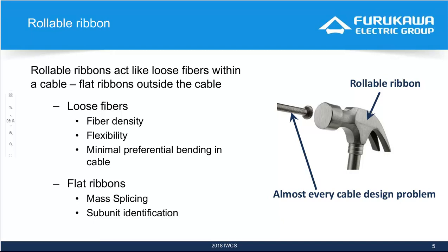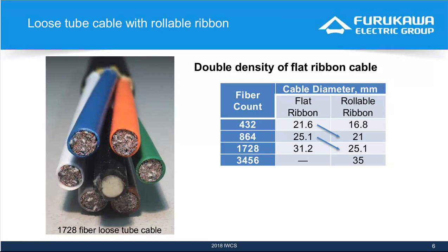Rollable ribbon is very exciting to me as a cable designer. As we look at rollable ribbon and its uses, it looks like a hammer and almost every cable design problem looks like a nail — we keep finding more applications for the rollable ribbon subunit. Its advantages are that inside the cable structure, it acts as if you just had loose fibers, so you can have a very high density core. The cable can be very flexible, with minimal preferential bending of the ribbons. This image is of a 1728 fiber cable.